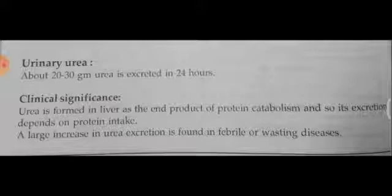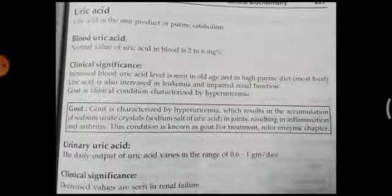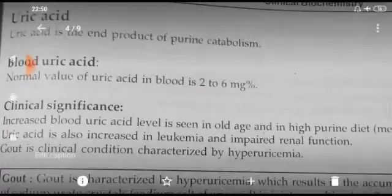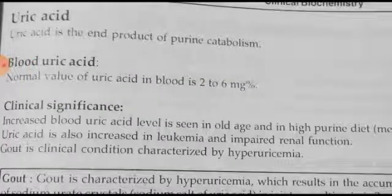Normal urinary content is about 20 to 30 grams of urea excreted per day. Urea is formed in the liver as the end product of protein catabolism, so its excretion depends on protein intake — more protein intake means more amino acids, more nitrogen, and more urea synthesis. A large increase in urea excretion is found in febrile or wasting diseases.